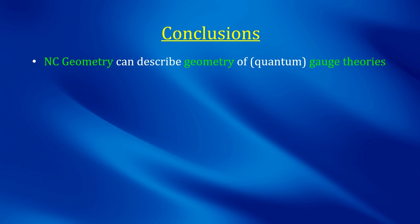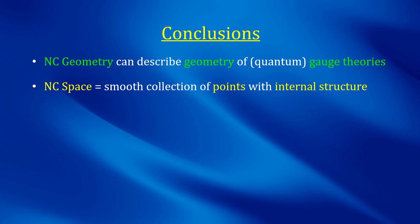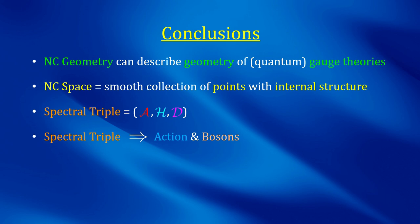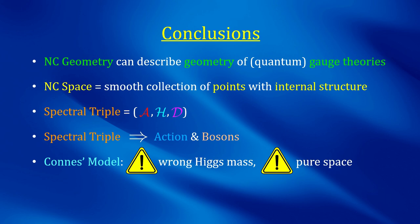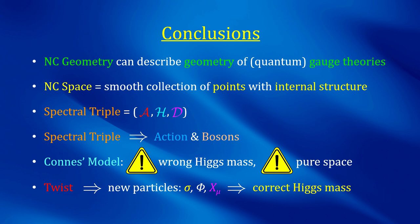So, let's recap what we said so far. We've seen that non-commutative geometry is the appropriate tool to describe the geometry of quantum gauge theories. We defined non-commutative spaces as smooth collections of some sort of points that do have an internal structure. Then we went more into details and showed that one can describe a non-commutative space as a spectral triple containing an algebra of observables, a Hilbert space describing fermions, and a Dirac operator that measures distances. We've seen that spectral triples determine both the full action of the theory and the bosons, both vectors and scalars, that will appear in the theory. We quickly summarized the predictions and the flaws of the Connes model, and we showed that by twisting non-commutative geometry, we can get additional fields that can cure both the wrong Higgs-mass problem and the no-time problem of the ordinary Connes model.